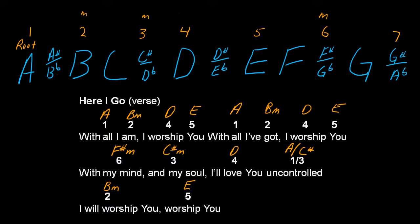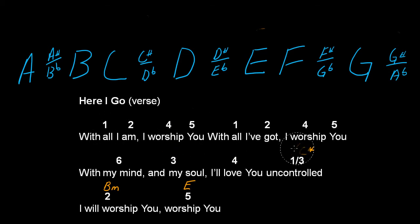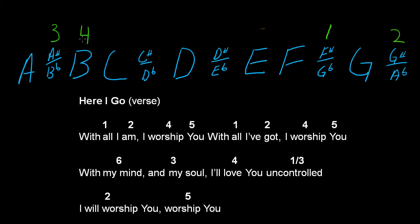I'm going to do this one more time in a different key so you can see one more example. Let's pick a weird key — F sharp. We're going to pick this as the root. Root is number one. Two is a whole step, three is a whole step, four is a half step, five is a whole step, six is a whole step, seven is a whole step, and back to one.